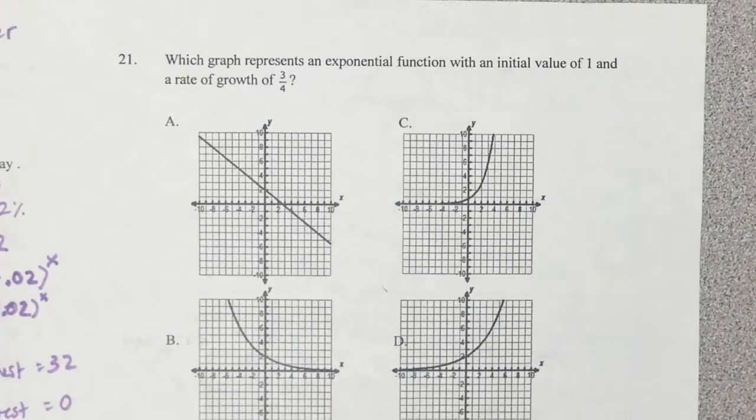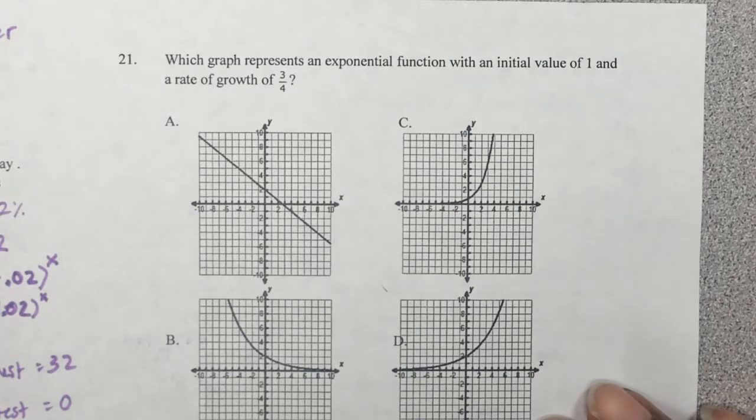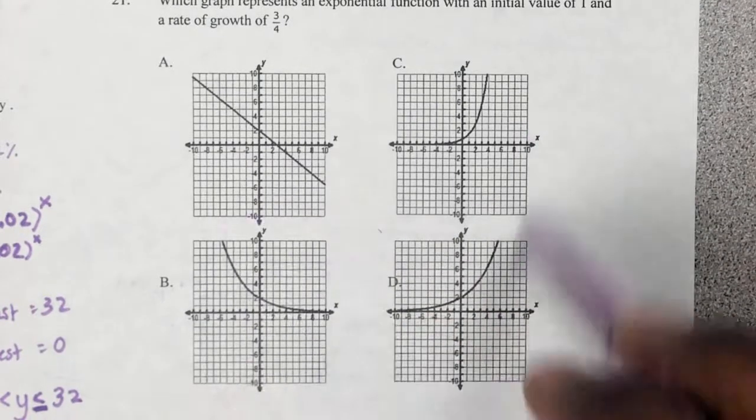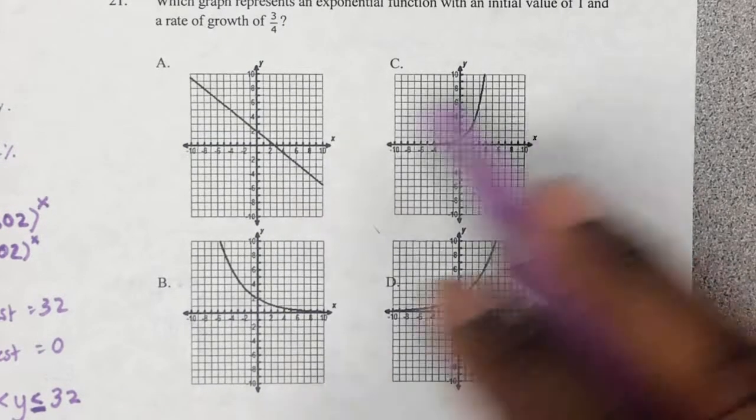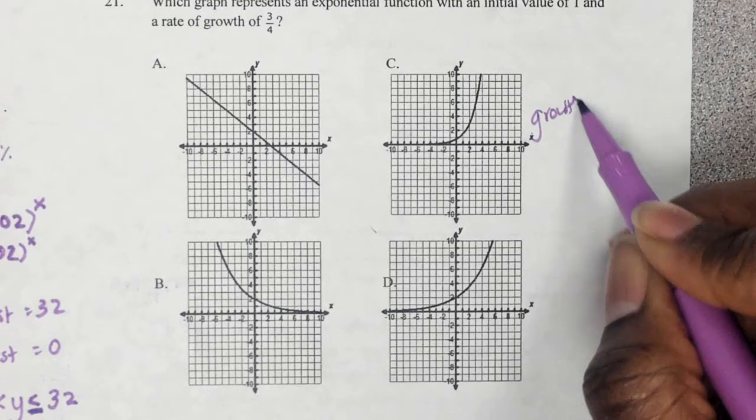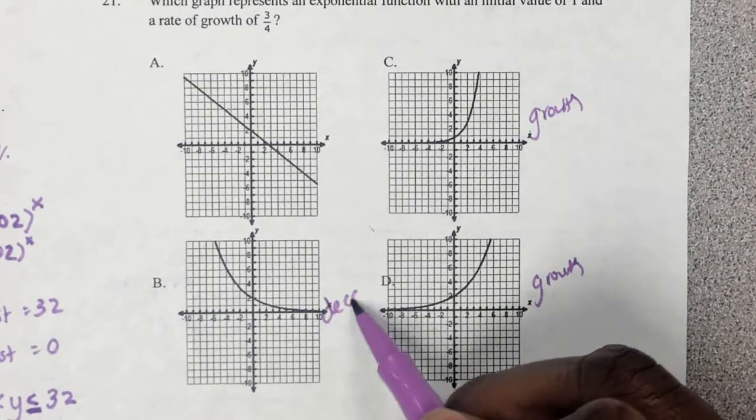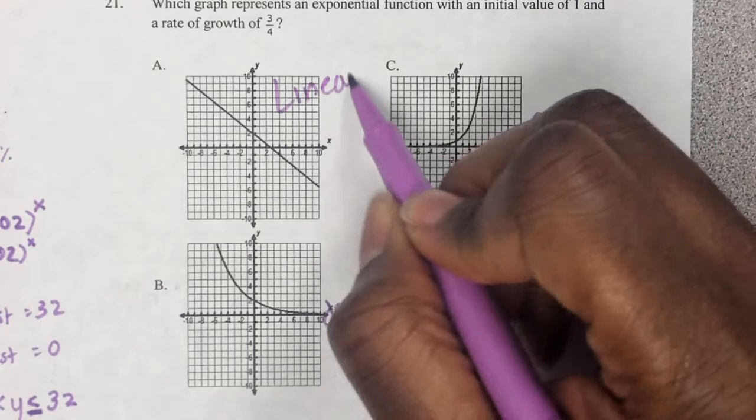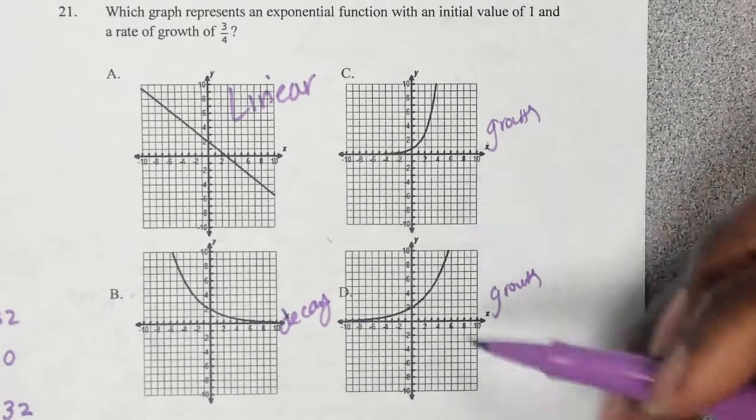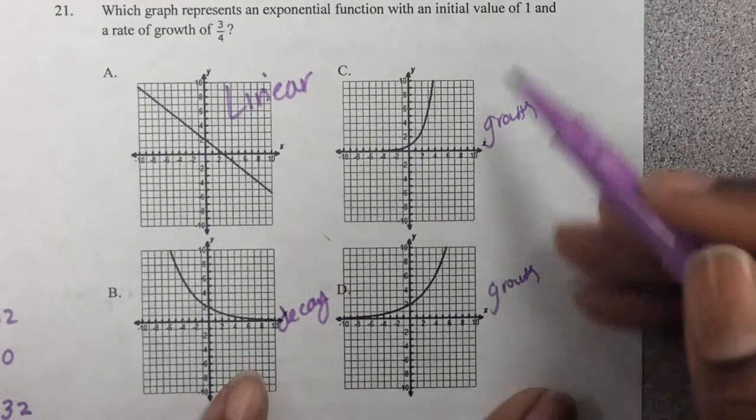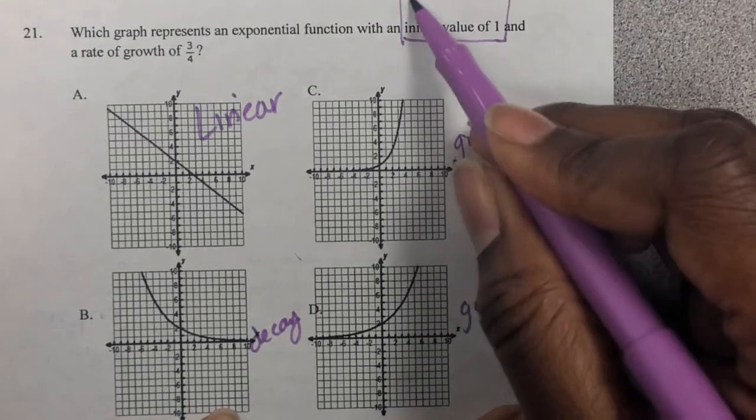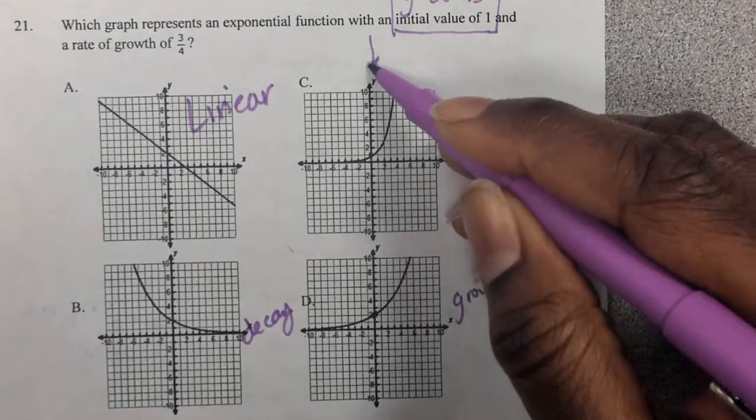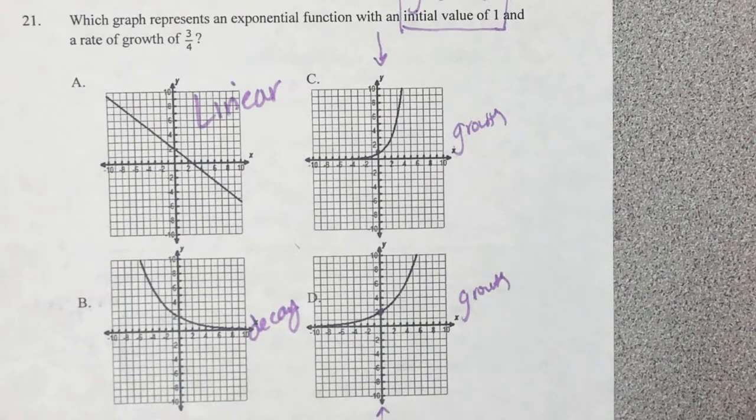Number 21, which graph represents an exponential function with an initial value of 1 and a rate of growth? Here's some more extra credit. Write down whether the table is growth or decay for extra credit. Write down whether it's growth or decay. This one is growth, this one is growth, this one is decay, this one, this ain't even an exponential. This is linear. So we know it could either be C or D. So we're looking for the initial value to be at 1, and the initial value is found on the y-axis. So which one of these has an initial value of 1, which is on the y-axis? You see the y-axis? Where does it touch the 1?